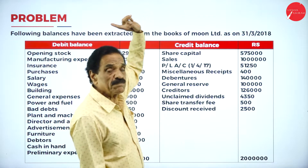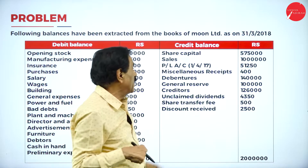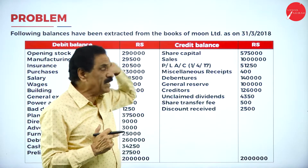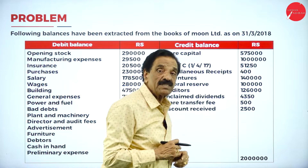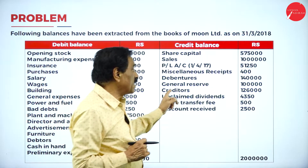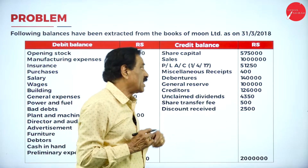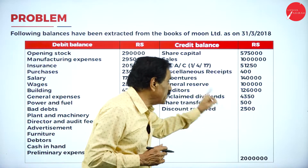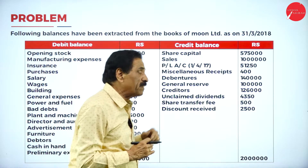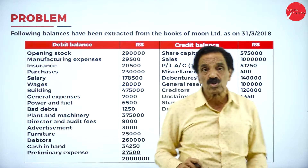Preliminary expenses will come under Schedule 9. Share capital comes under Schedule 1 on the liability side of the balance sheet. Sales will come in the statement of profit and loss account. Profit and loss account of last year should be added. Miscellaneous receipt is income. Debenture is a secured loan. General reserve will come under reserves and surplus. Creditor is a current liability. Unclaimed dividend is a current liability. Share transfer fees is income. Discount received is income.